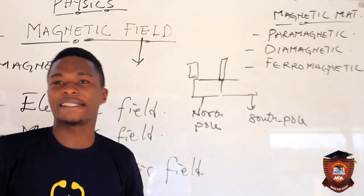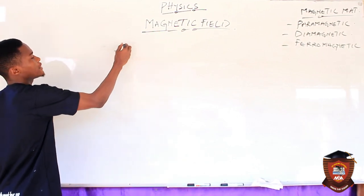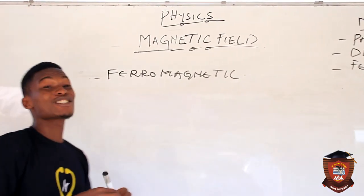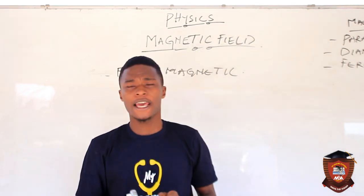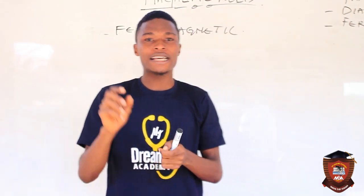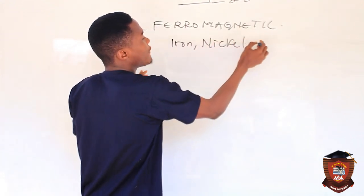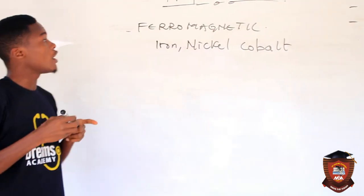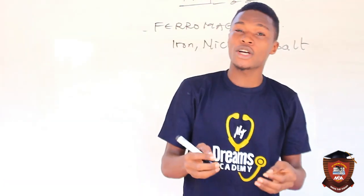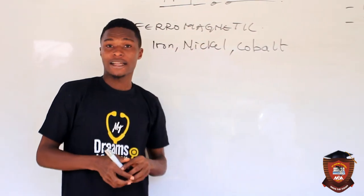Starting with ferromagnetic materials: these are materials that are strongly attracted by a magnetic field — they get strongly attracted to magnets once they are in contact with any magnetic field. Examples of ferromagnetic materials are iron, nickel, and cobalt. The reason these materials are ferromagnetic is that they have electron spins in the same direction as magnets, so they can easily align their electrons in the direction of the magnetic field.